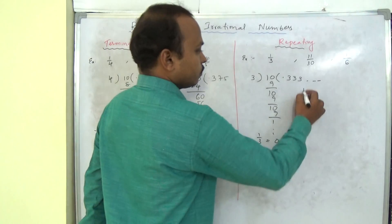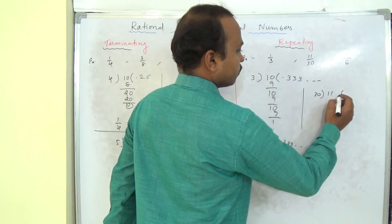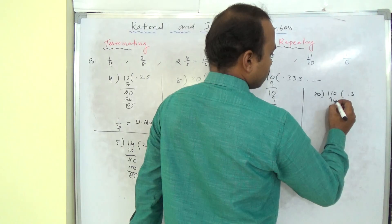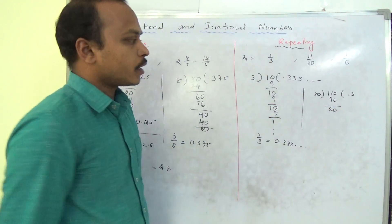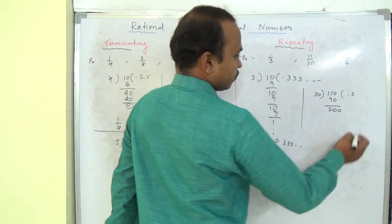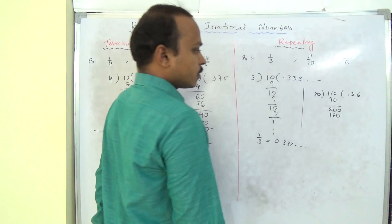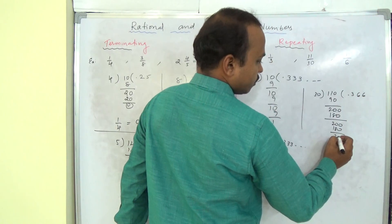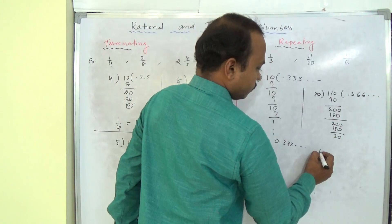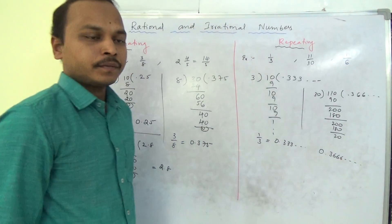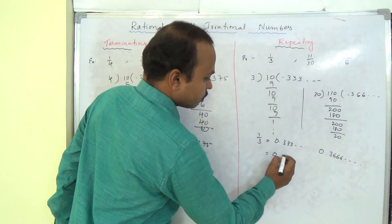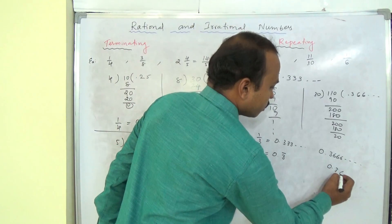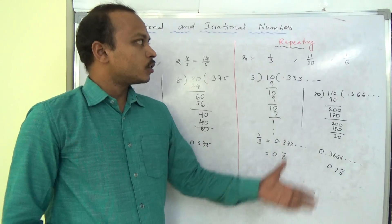Similarly, 11 by 30. Doing 11 divided by 30: keep 0 and the decimal point. 30 into 33 is 3 times, giving 90, remainder 20. Bring down 0; 30 into 6 is 180, remainder 20 again — and it keeps repeating. Here 6 is repeating, so 11 by 30 equals 0.366... We can write this using bar notation: 0.3 with a bar over 6, meaning 0.3̄6̄. These are all repeating decimals.